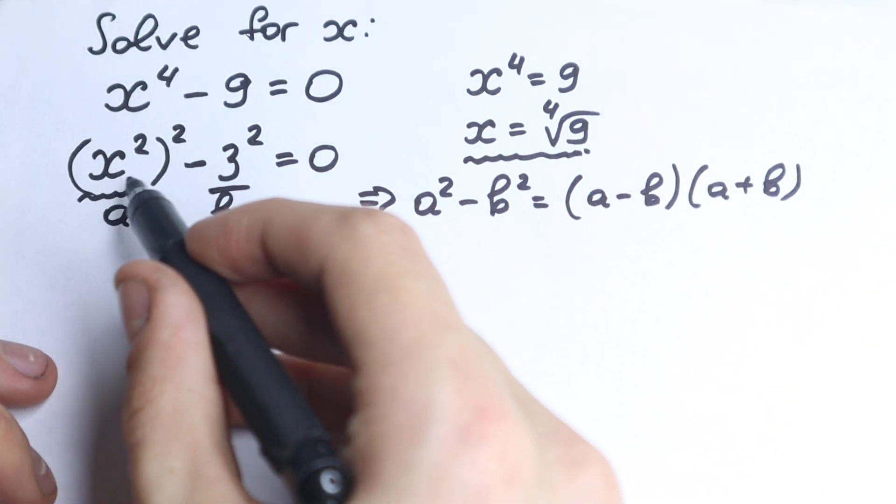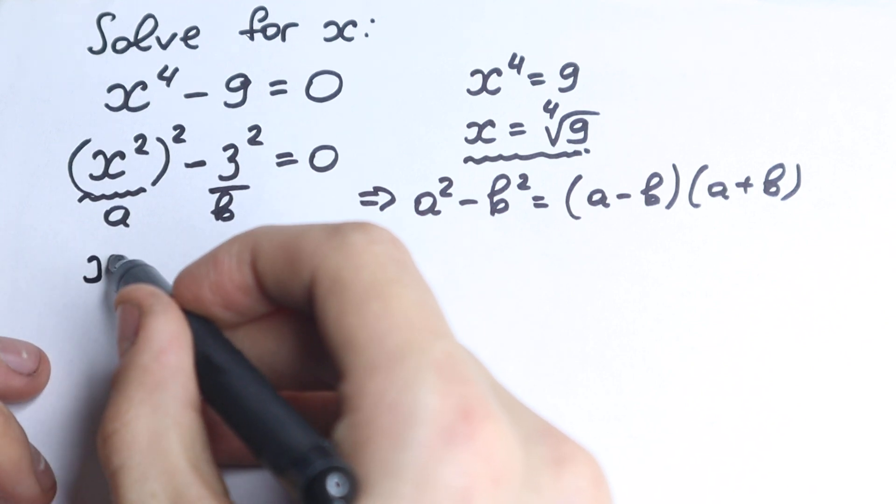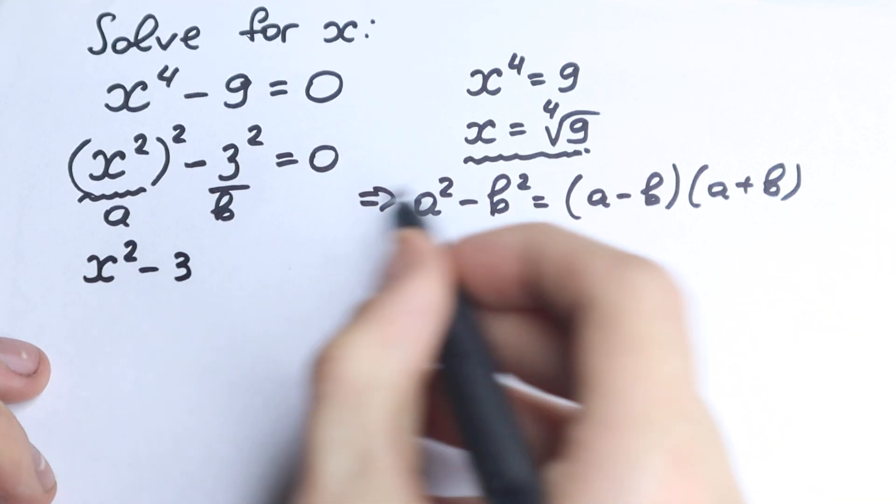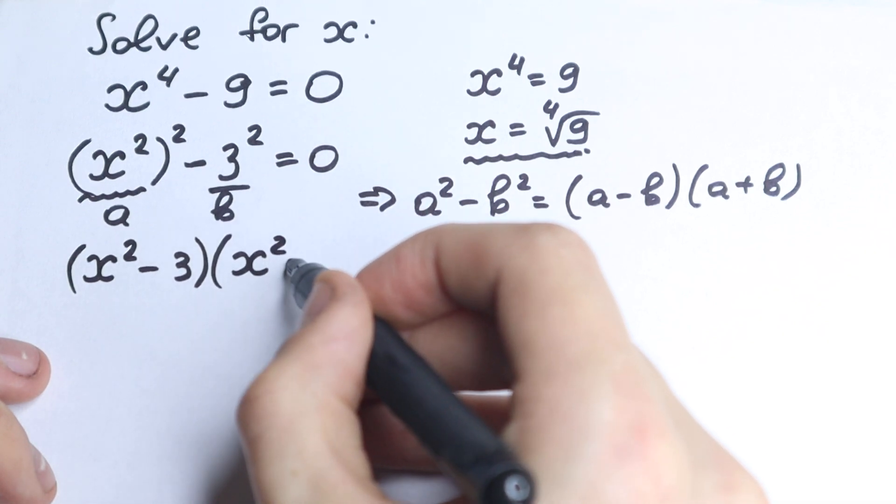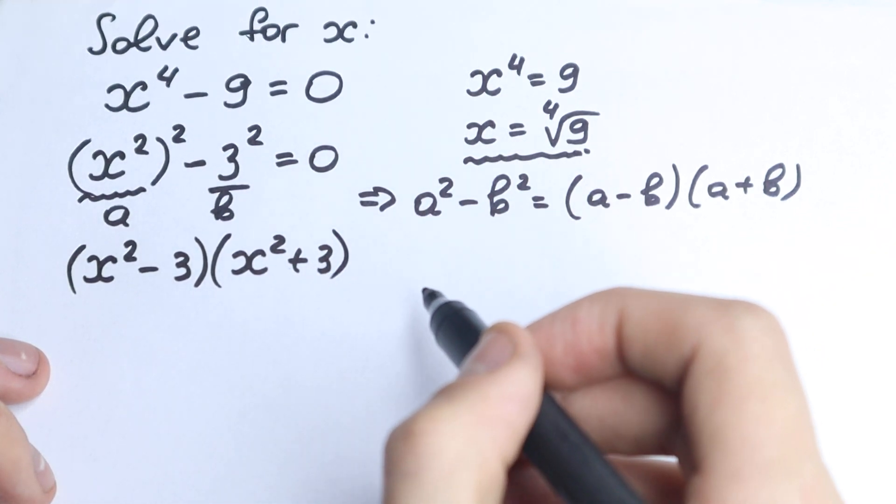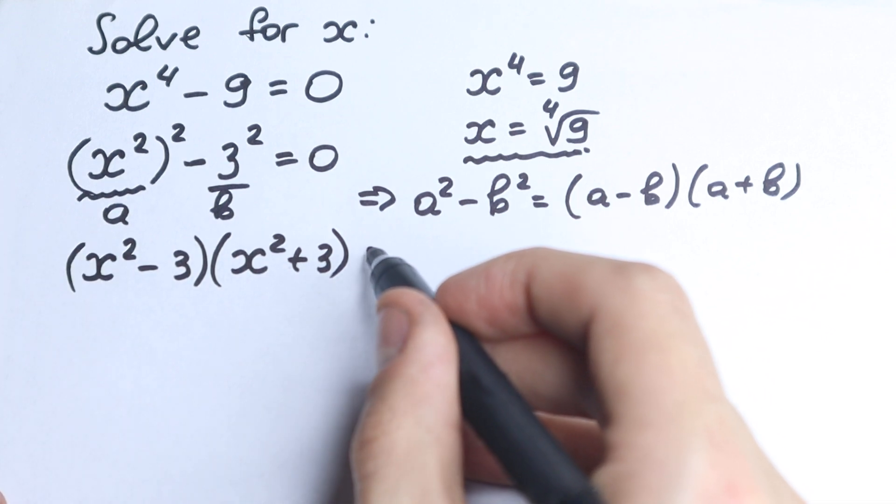So we have x squared minus three, according to this identity formula, times x squared plus three. Okay, we factor it and equal to zero.